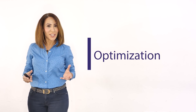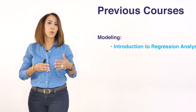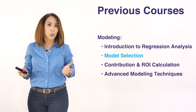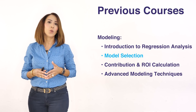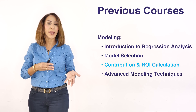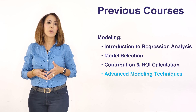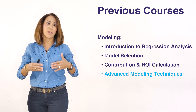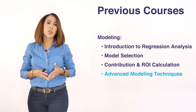Today's course is about optimization. In the previous course we covered modeling — we talked about regression analysis and how it is useful for marketing mix models. We also talked about model selection with an emphasis on genetic algorithm as a method to choose the best model. We introduced the concept of contribution and ROI, the trade-off between them, and concluded with a snapshot of three main advanced modeling techniques: nested models, pull regression, and log linear.